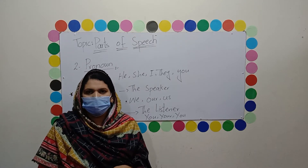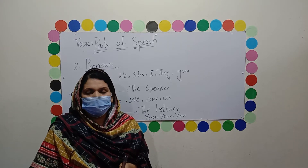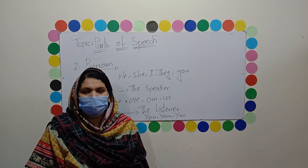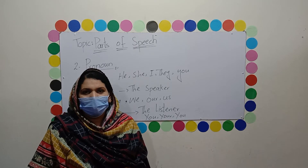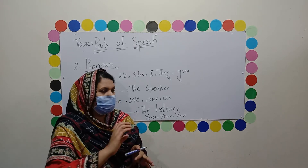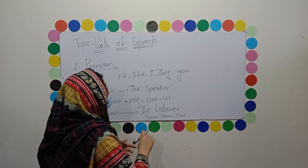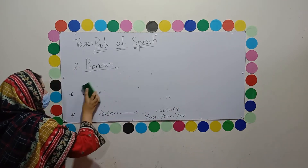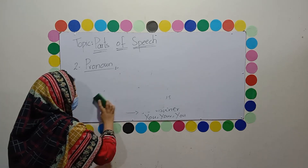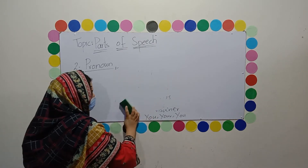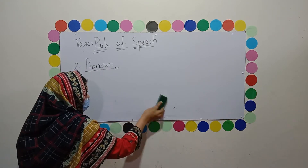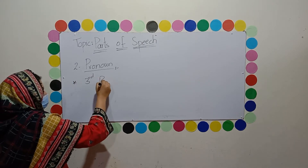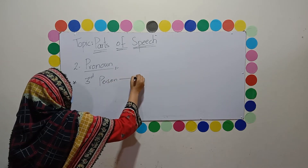Now we discuss the third person. Third person is used for the absent man — the person who is not present during the conversation. Third person ham unke liye use karte hain jo hamari absence mein hote hain. You have to remember: first person is for the speaker, second person is for the listener, and third person is for the absent person.